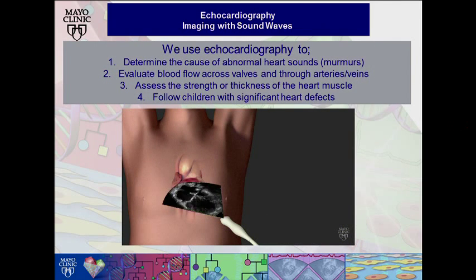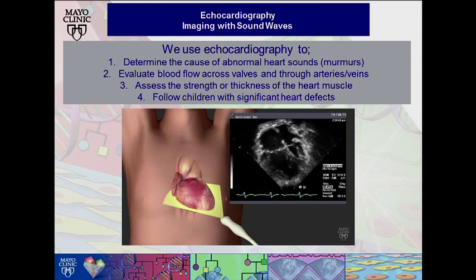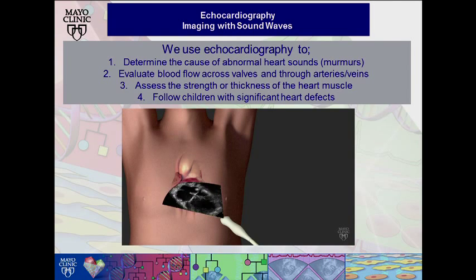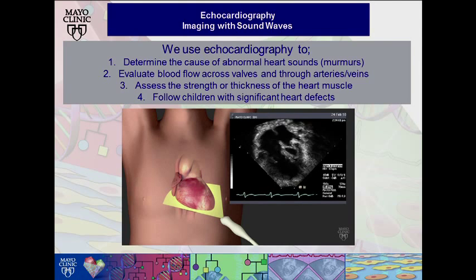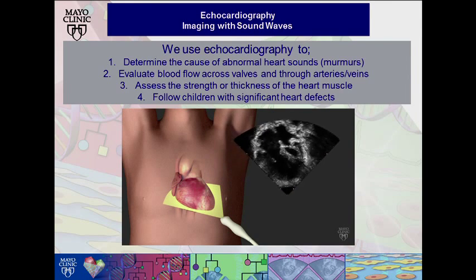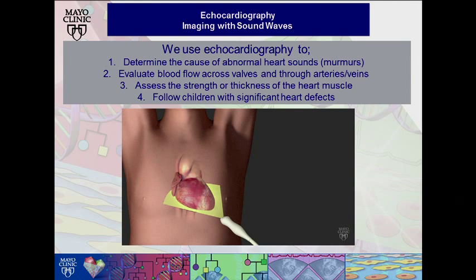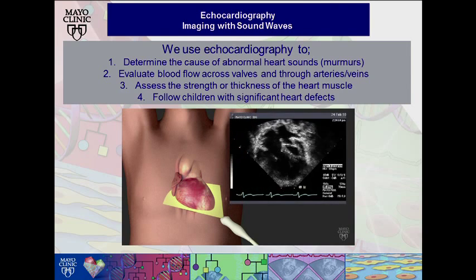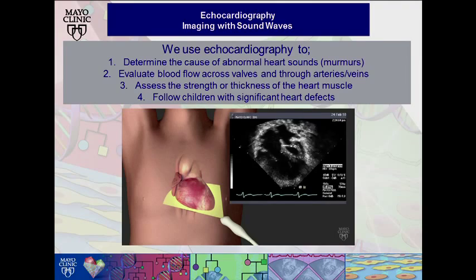We can use echocardiography to determine the causes of abnormal heart sounds, which we often refer to as murmurs. Your pediatrician or family physician may detect such a murmur in your child and ask for an echo exam to be performed. We can also evaluate the blood flow across valves, either normal or abnormal, and through arteries and veins. We can assess the strength of heart muscle as well as its thickness, and if we find something that's not normal, we can follow the progress of that problem throughout your life using ultrasound to follow the progress and function of your heart over time.